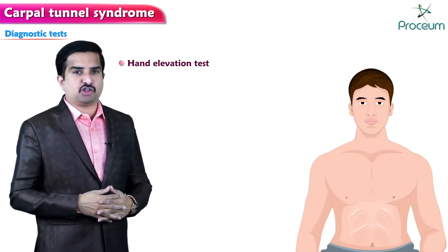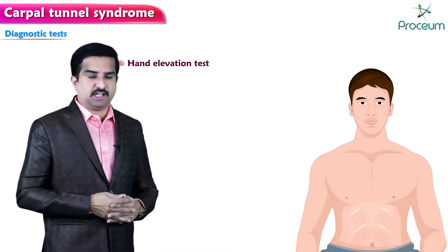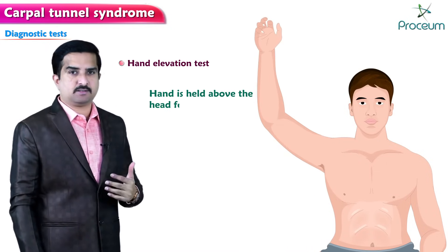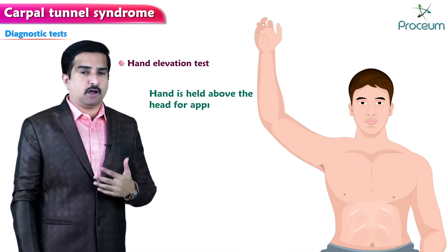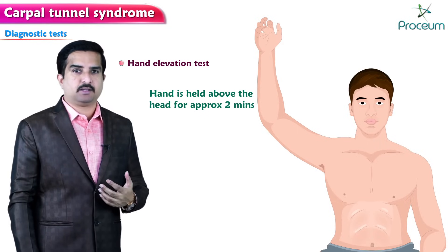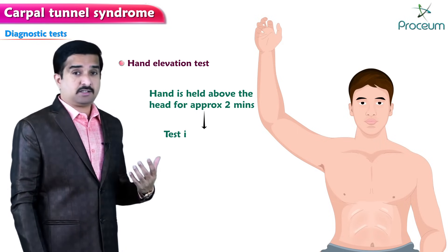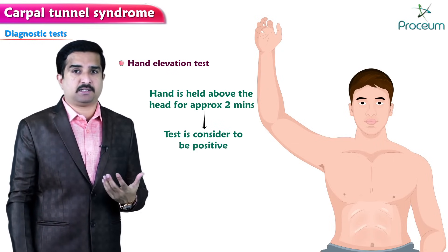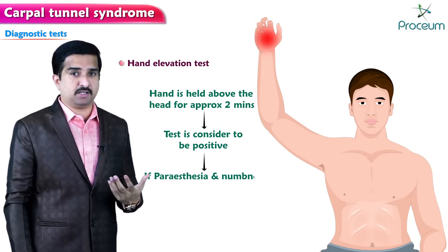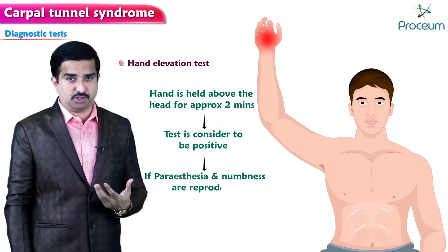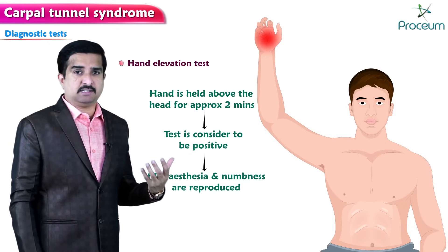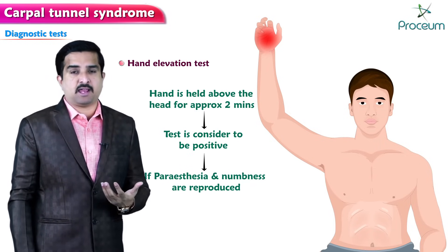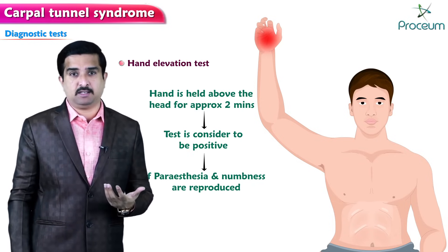In the hand elevation test, the hand is held above the head of the patient for approximately two minutes. The test is considered positive if symptoms of carpal tunnel syndrome — paresthesia and numbness — are reproduced. This test is easy to perform in a clinical setting and has higher sensitivity and specificity compared to other tests.